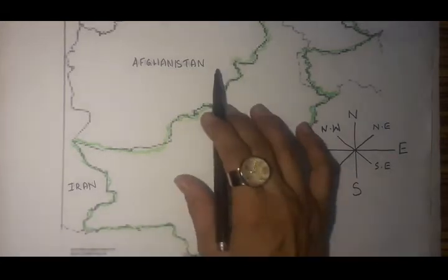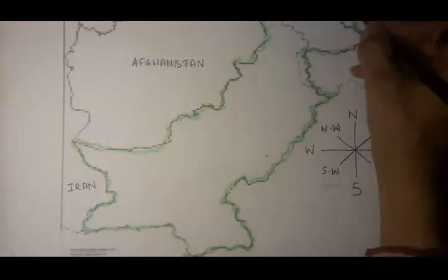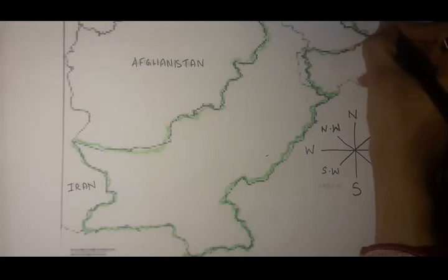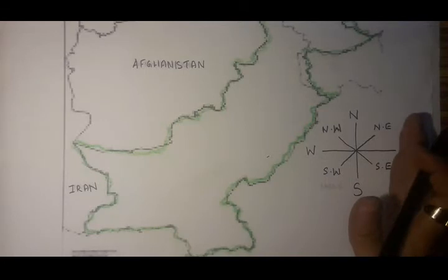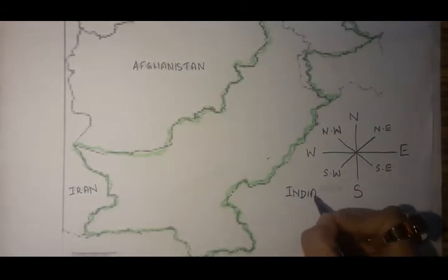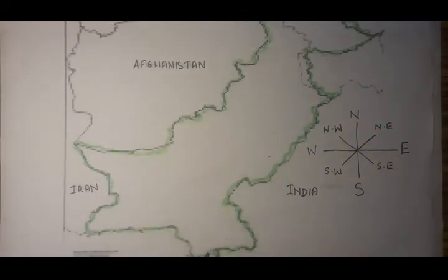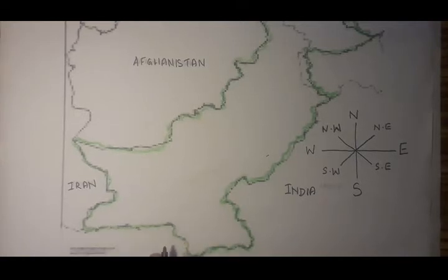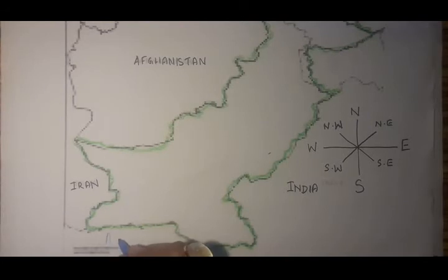If you look in the northern direction, you'll find another state, and this is China. So to the north of Pakistan is China. If you look towards the eastern side of Pakistan, you will find India — so India is situated to the east of Pakistan. Then if you look southwards, there is a sea, and that sea is called the Arabian Sea.